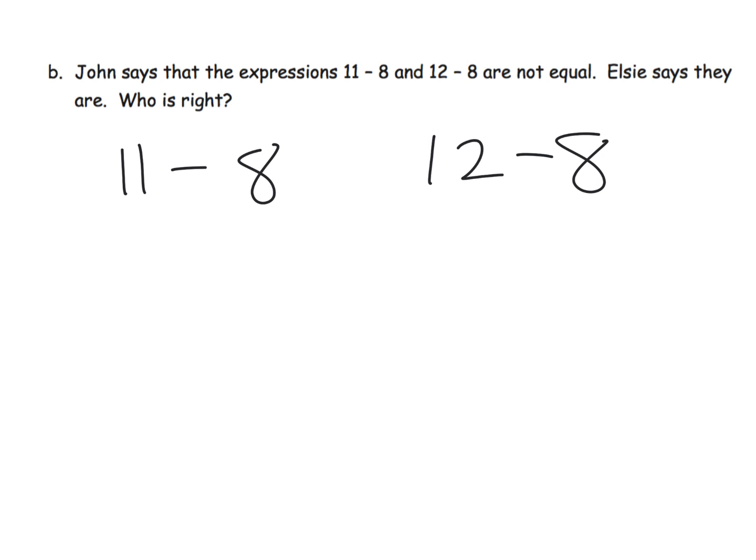Another way is let's just use the number bonds method or the count on strategy. I'm going to use the count on strategy for this first one because 8 is 2 away from 10. And then we have one more to get to 11. So 8 plus 2 is 10 plus 1 is 11. So 2 plus 1 is 3. So that means 11 minus 8 is 3.